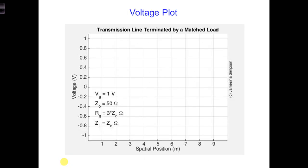Let's return to our example video. Vg is equal to 1, and we saw that the initial pulse has an amplitude of 0.25 volts.